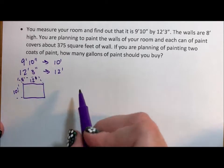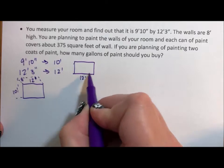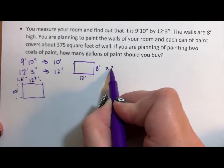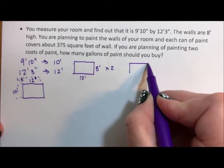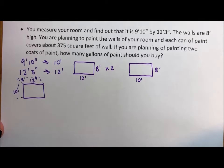So each wall, we have two walls that are 12 feet by 8 feet, and we have two walls that are 10 feet by 8 feet that we need to paint.